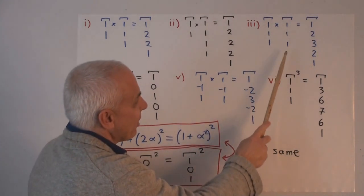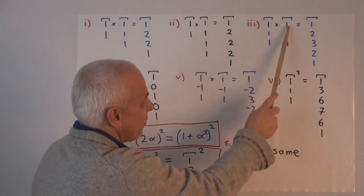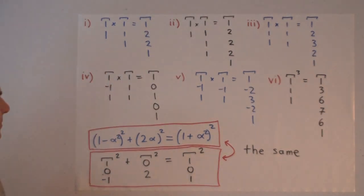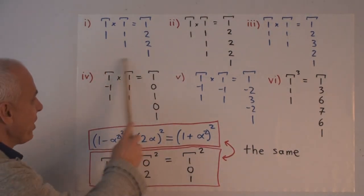Here are two trinomials multiplied together. 1, 1, 1 times 1, 1, 1 gives us 1, 2, 3, 2, 1. This one we've seen already before.